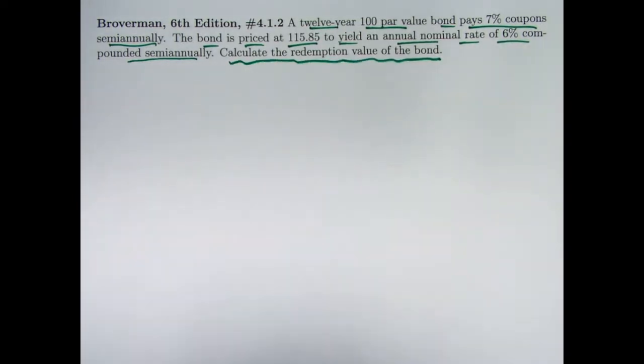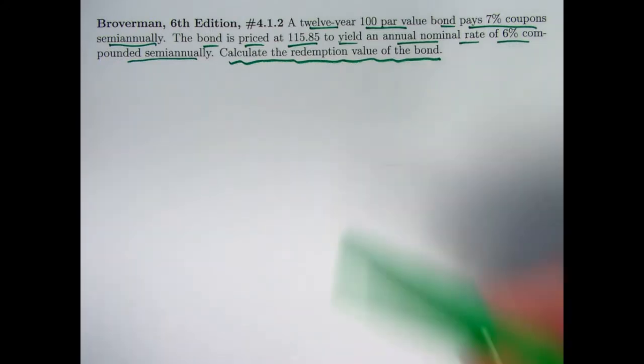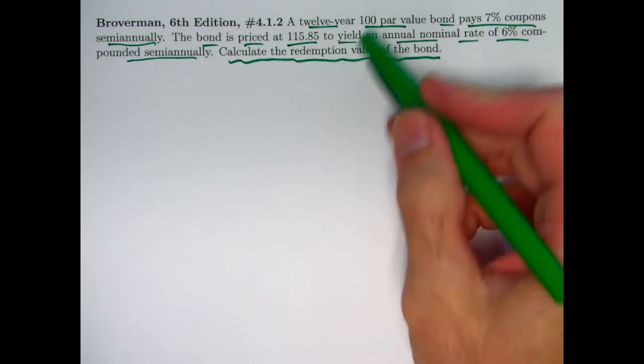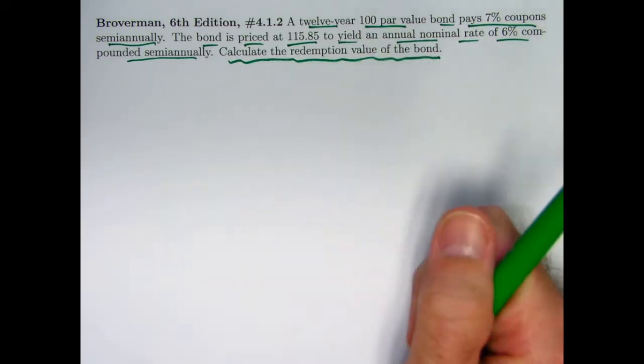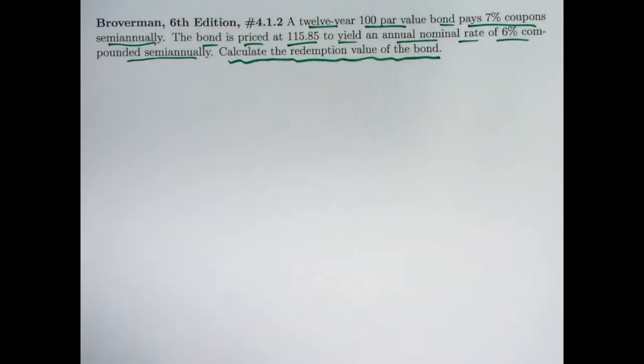Now something here is going to go on that's a little different than what I said in the first video with problem 4.1.1. I said typically the redemption value is the same as the face value or par value. That is the typical thing, but evidently here, since we're calculating the redemption value, it's going to be different than the par value. It's not likely to be the same here. So this is kind of an atypical case.